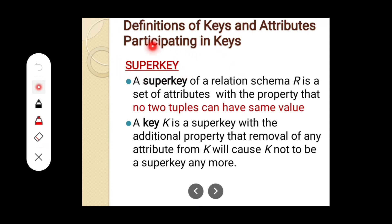First we are going to see about super key. So what is a super key? Most of you are familiar with the primary key. Primary key is a key that can be used to uniquely identify a particular record in a table or in a relation. Super key is also similar to primary key, but there is some difference. A super key of a relation schema R is a set of attributes with the property that no two tuples can have the same value. Super key can be a single attribute or a combination of attributes, and the super key values must not have the same value in multiple tuples — the values must not be repeating. That is the concept of super key, the same concept as the primary key.